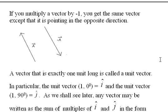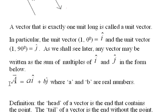A vector that is exactly one unit long is called a unit vector. In particular, the unit vector that's one where r length of one and zero is the angle, we write that as i with a little cap on it. And the unit vector one and 90, j, those are special unit vectors. As we shall see later, any vector you can write can be written as a form, a sum of two unit vectors.